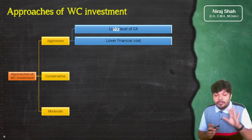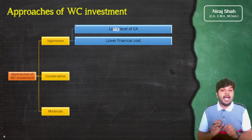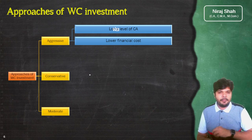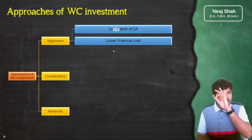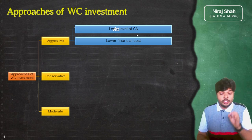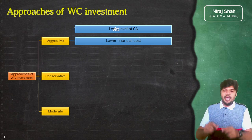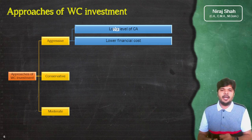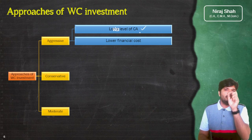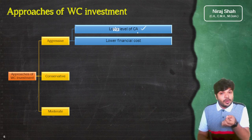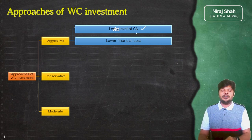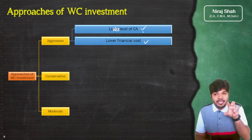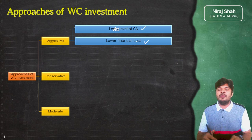Aggressive policy में lower financial cost लगता है — debtors को बहुत कम credit मिलती है या बिल्कुल नहीं, उन्हें तुरंत पैसा लौटाना पड़ता है। Income outstanding नहीं रखते, तुरंत वो लेकर आते हो। Stock में investment कम से कम करते हो, production facility में हो सके उतनी कम inventory रखते हो। इससे होता यह है कि current assets में investment बहुत low हो जाती है और पैसा business में stuck नहीं रहता, जिससे lower financial cost हो जाती है।